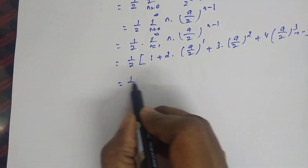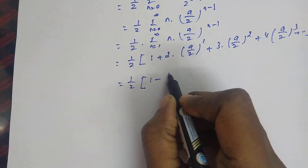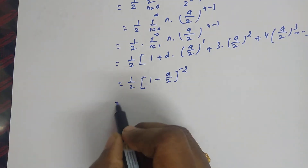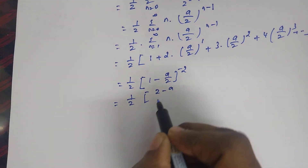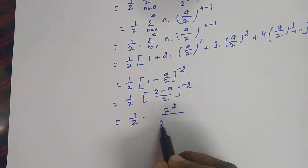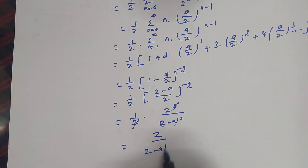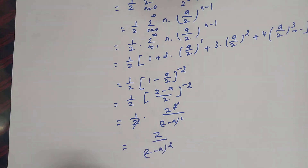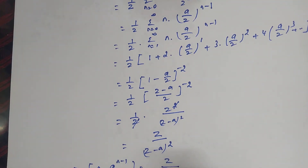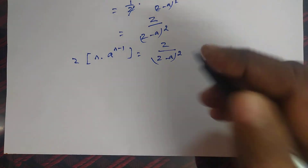This gives 1/Z into 1 minus a/Z whole power minus 2, which equals 1/Z into z squared divided by z minus a whole squared. Cancelling z, we get z divided by z minus a whole squared. So the Z-transform of sequence n into a power n minus 1 equals z divided by z minus a whole squared. This is the answer.